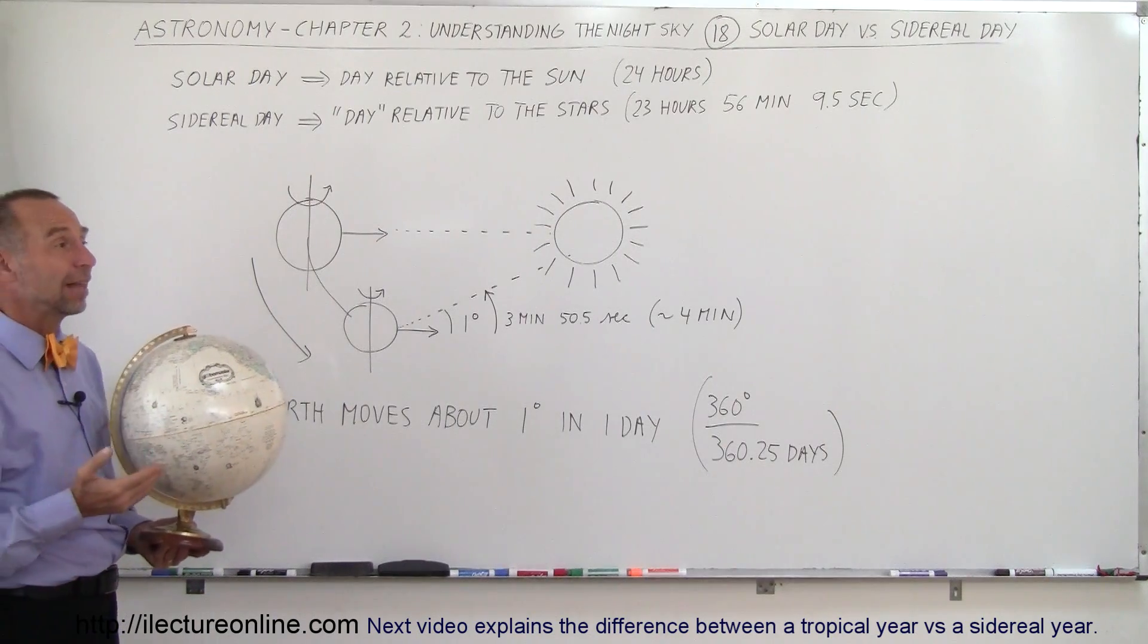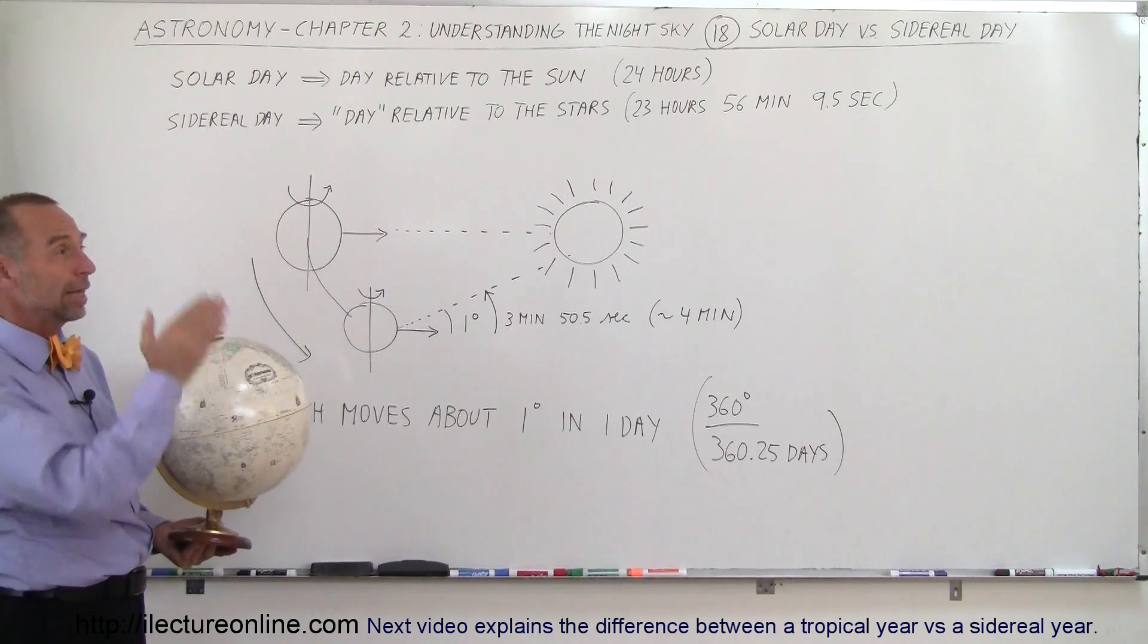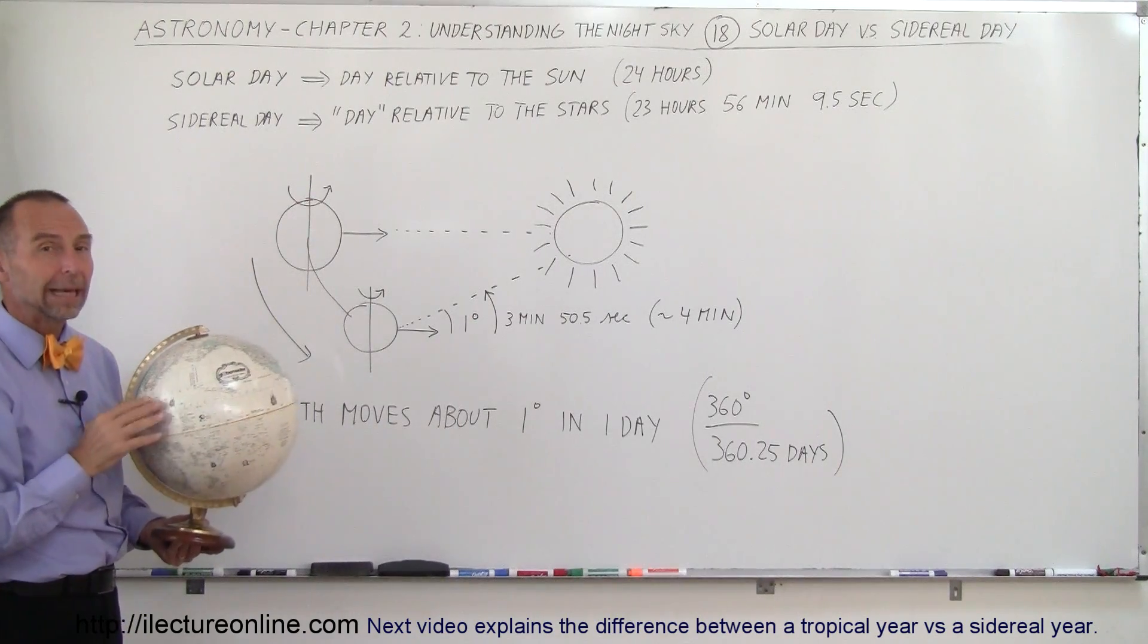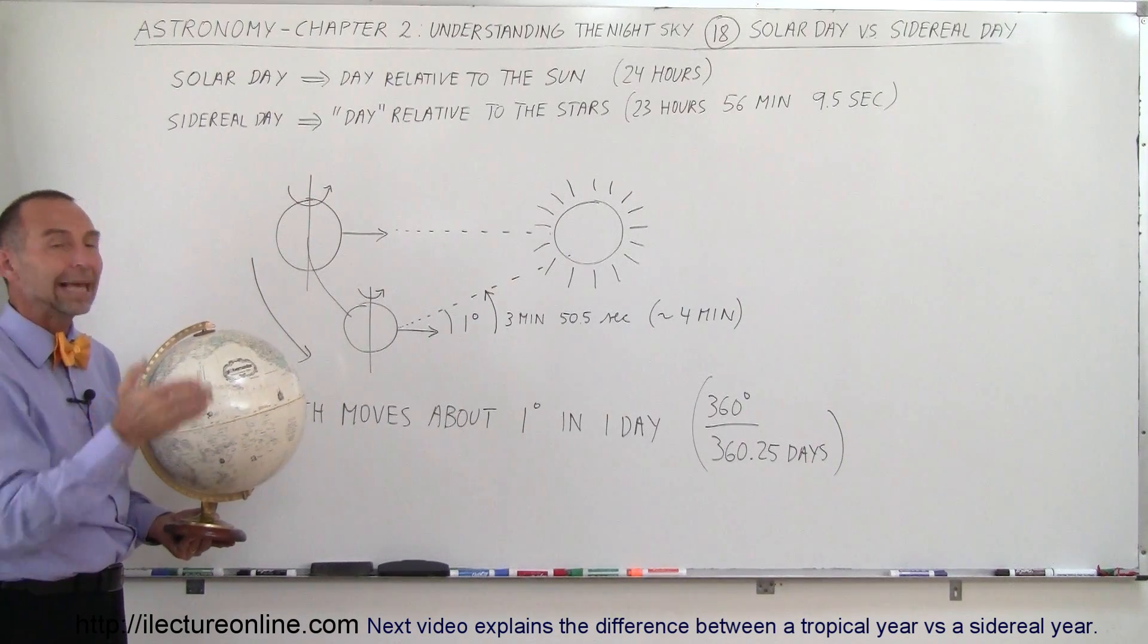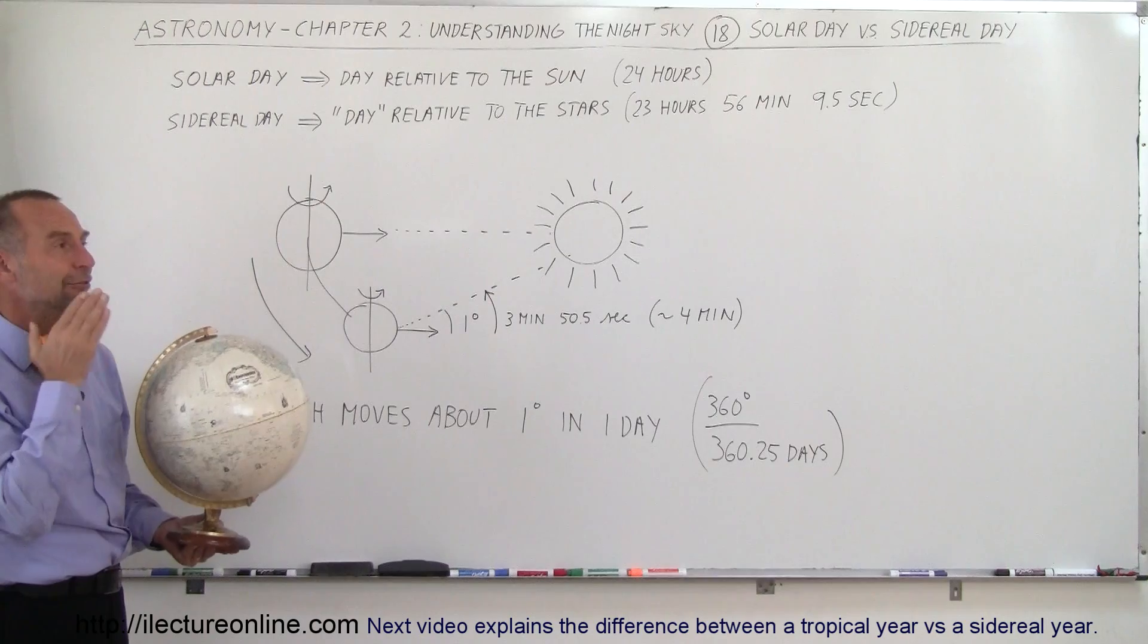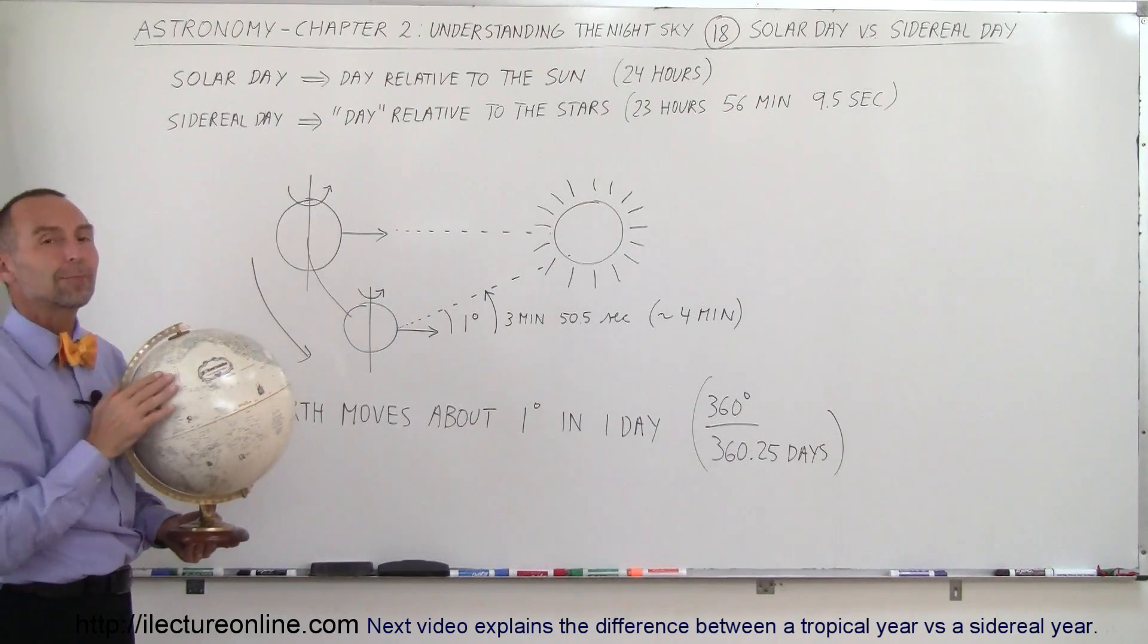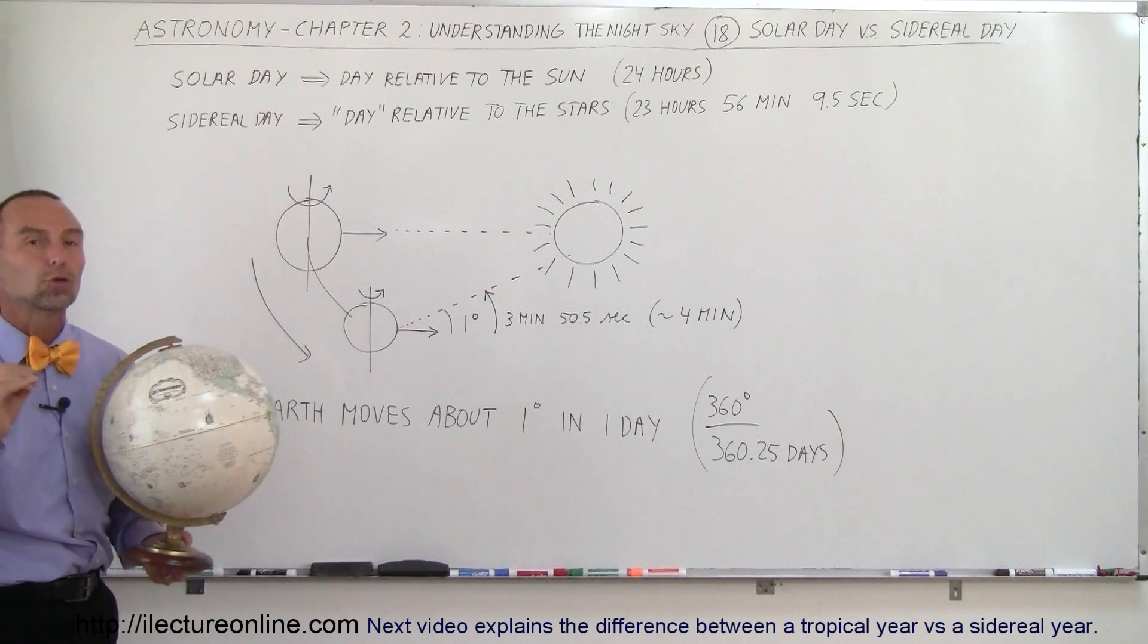So what that means, solar day, is that if we wake up at 8 o'clock in the morning and the Sun is in a specific position, if we then wake up a day later, the Earth will be facing the Sun in the very same spot, and that takes exactly 24 hours.